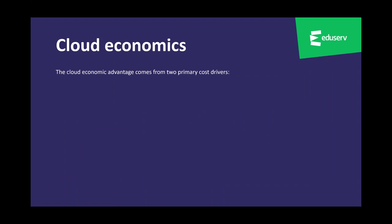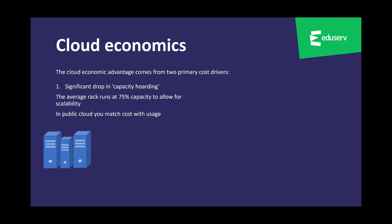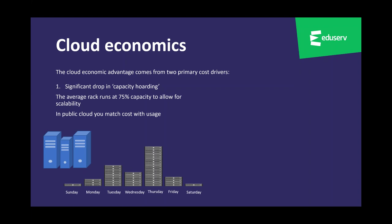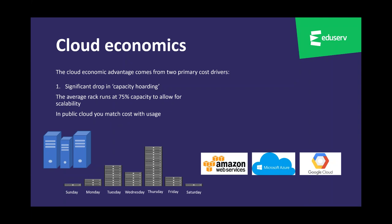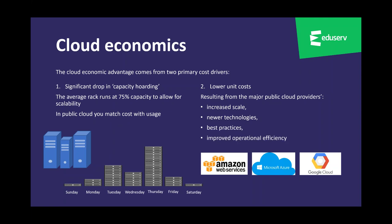On cloud economics, there are two main cost drivers. First, there is a significant drop in capacity hoarding. When you have your own data center, racks run at 75% capacity to allow for scalability, meaning usually a quarter of your capacity is wasted. In public cloud you match your cost with your usage — it's a pay-as-you-go model that scales depending on your demands. The main players are Amazon Web Services, Microsoft Azure, and Google Cloud. The second cost driver is lower unit costs: these major players offer increased scale, newer technologies, best practices, and improved operational efficiency, providing best-in-class infrastructure SLAs and resilience. You're transferring the risks so you can focus on the core activities of your organization.